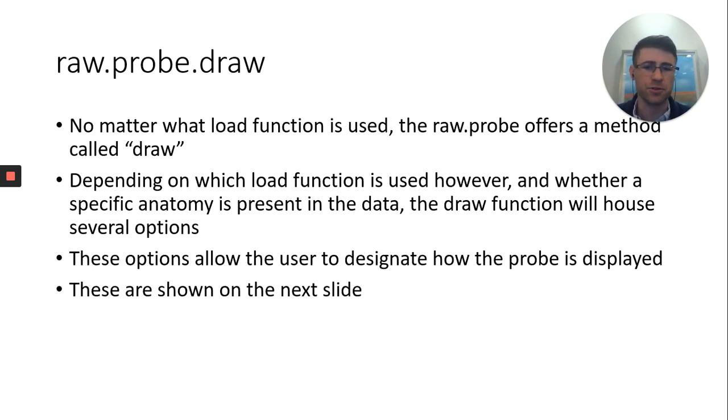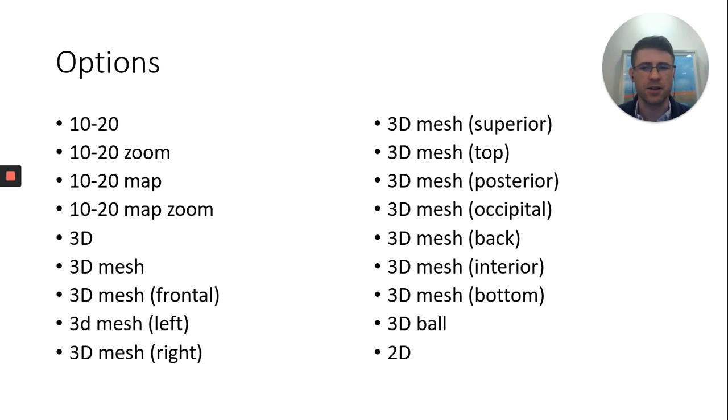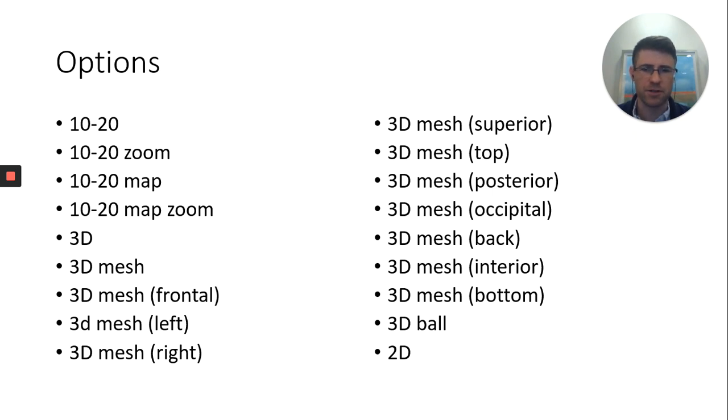No matter which function you use, you will have a function called draw, which means if you say raw.probe.draw, it will actually do something. Depending on which function is used and whether or not specific anatomy is present, you'll have different options. These options are as follows. And I won't go through, we would like to show each one of these, but I won't read them off for you. But of course, you can pause it and go through this if you like. So these are each of the options you have as far as the draw function goes.